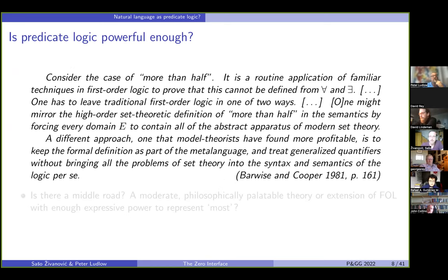Consider the case of more than half. It is a routine application of familiar techniques in first-order logic to prove that this cannot be defined from the universal and existential quantifier. One has to leave traditional first-order logic in one of two ways. One might mirror the high-order set theoretic definition of more than half in the semantics by forcing every domain E to contain all of the abstract apparatus of modern set theory. A different approach, one that model theorists have found more profitable, is to keep the formal definition as part of the meta-language and treat generalized quantifiers without bringing all the problems of set theory into the syntax and semantics of logic per se.